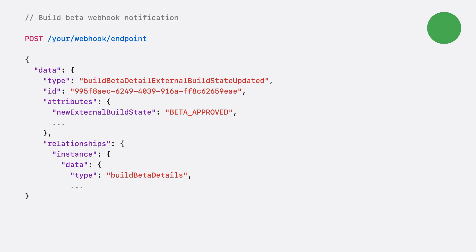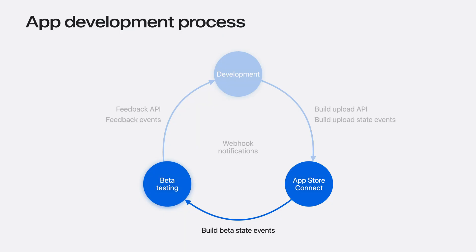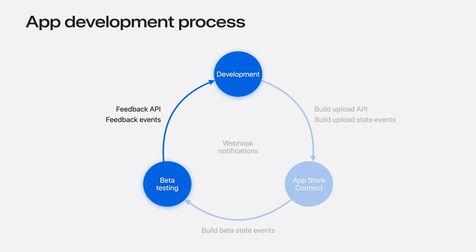Here is an example payload of a build beta state notification. The payload will show the updated state and include a specific build ID. When you receive this notification, you know that your build has passed review and is ready for external testing. That's how you can use TestFlight to distribute your new build.